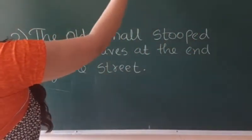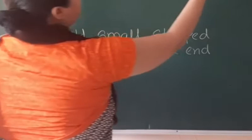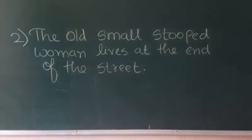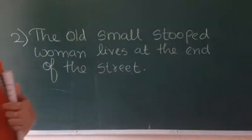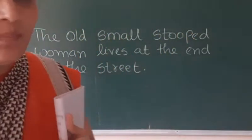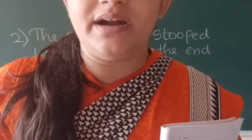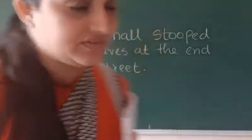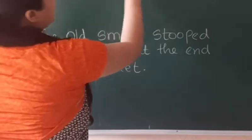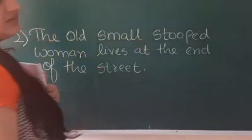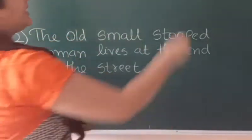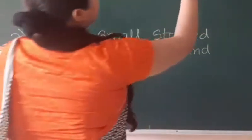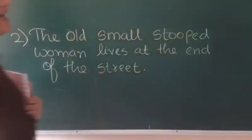The first sentence is: 'Rita spotted large six brown birds while returning from school.' To make it easier, we will underline all the adjectives. So 'large' is an adjective, 'six' is an adjective, and 'brown' is an adjective.